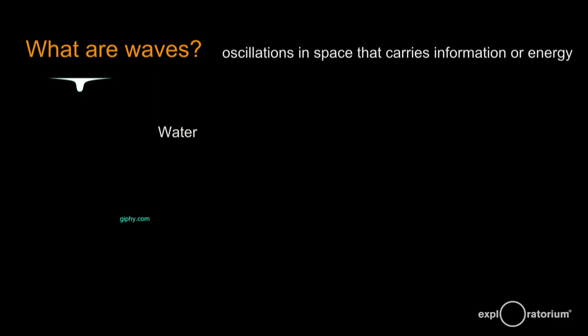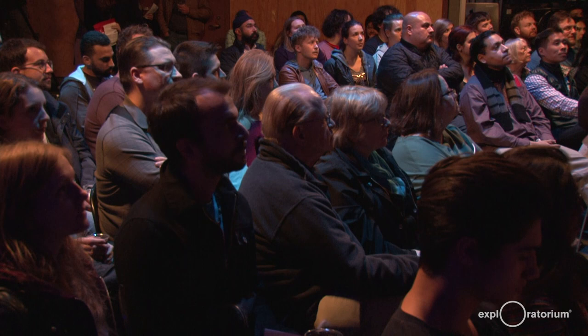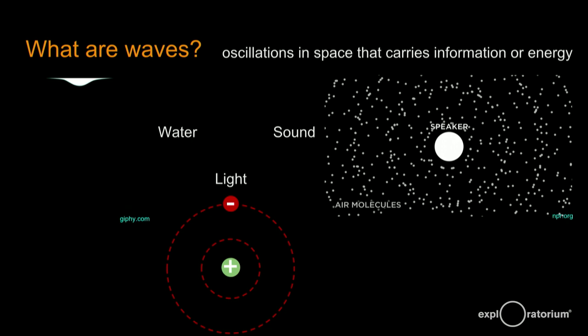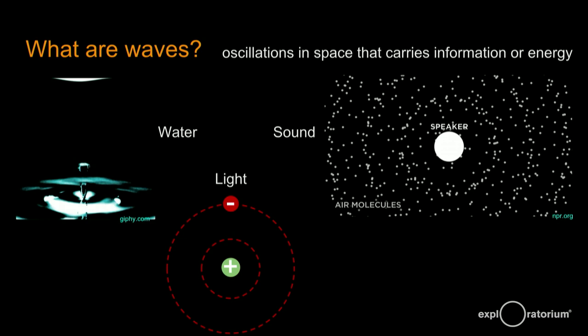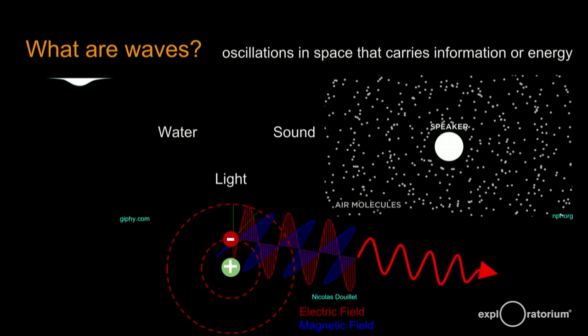Water waves is a perfect example — everybody's familiar with water waves. We just oscillate the water, cause some disturbance, and then we have this ripple that travels. Then we also have sound waves, which are a pressure wave. I'm causing a disturbance in the molecules in front of my mouth, they push on the next molecules until they get to your ear and vibrate your ear bones. And then there's light waves, which originate with electrons — if the electron moves, it causes a disturbance in the electromagnetic field, which gives me a light wave.